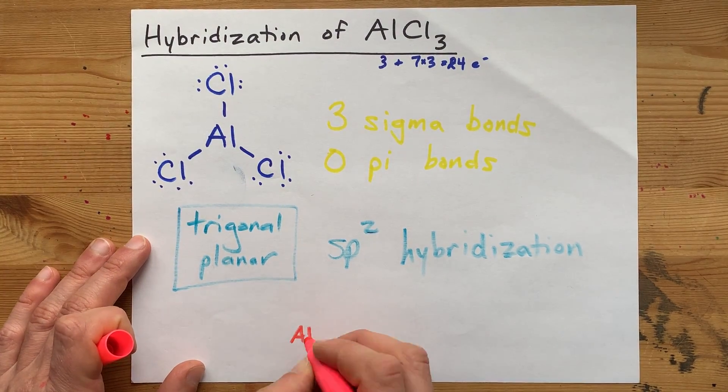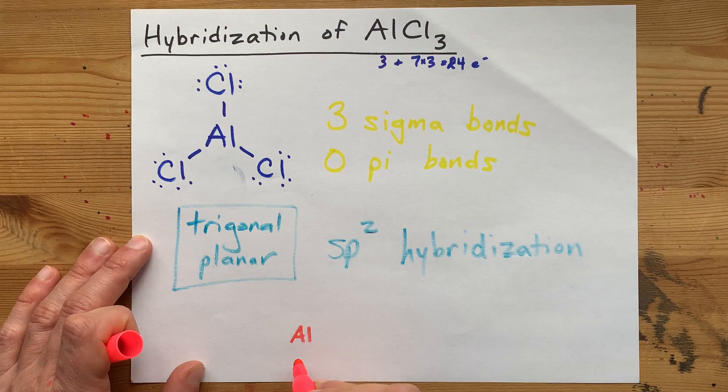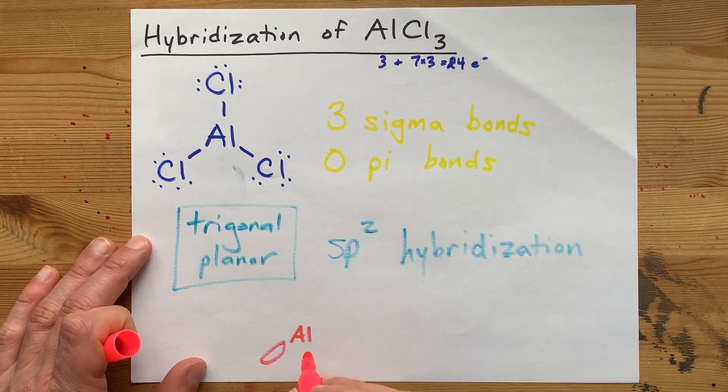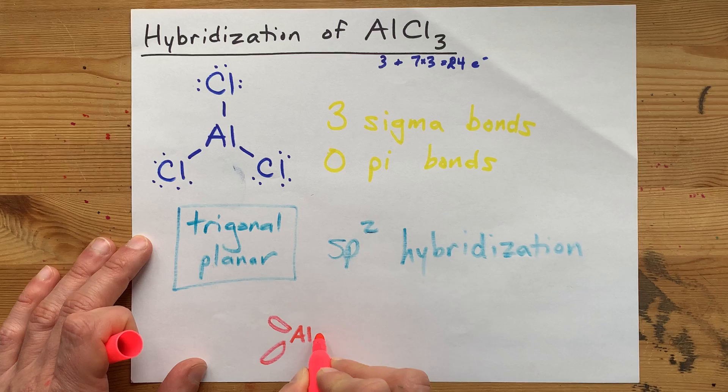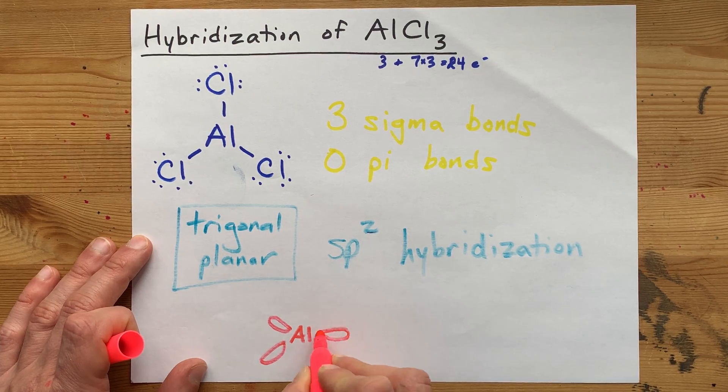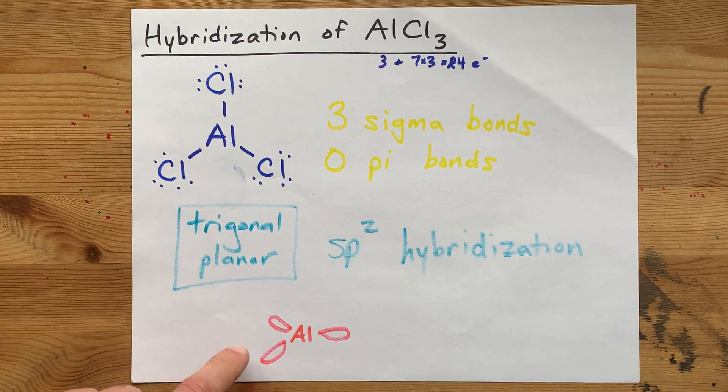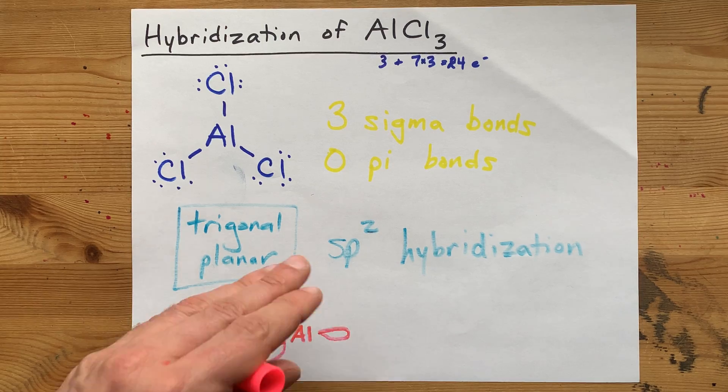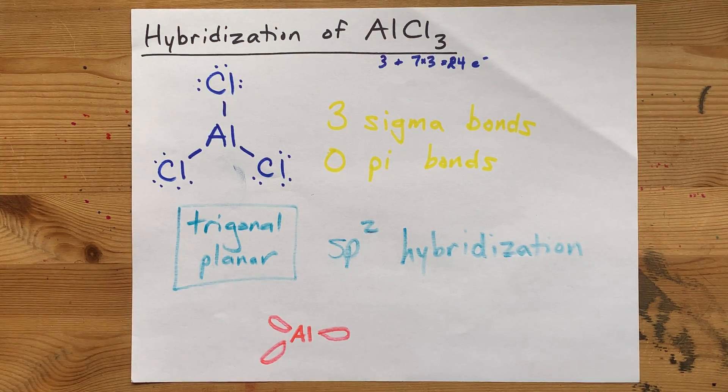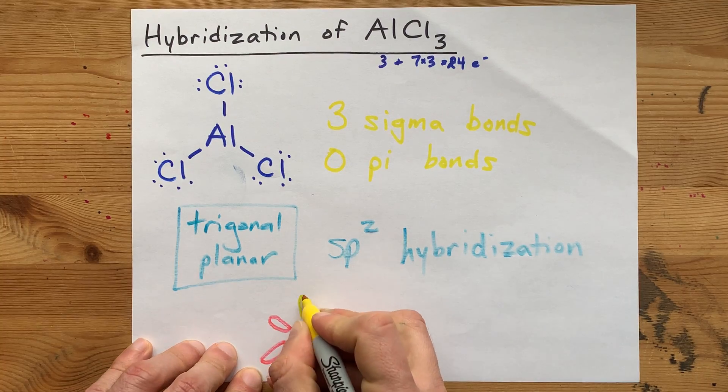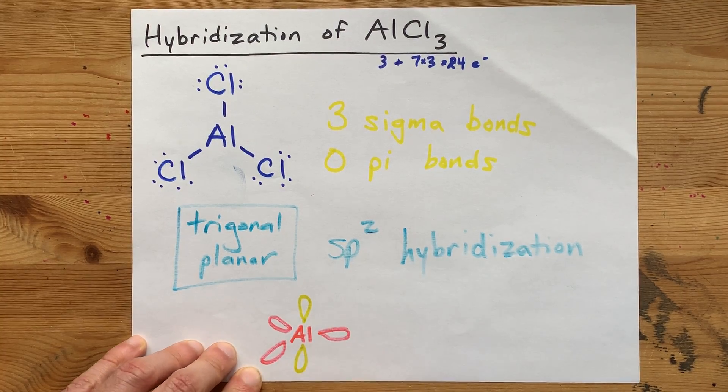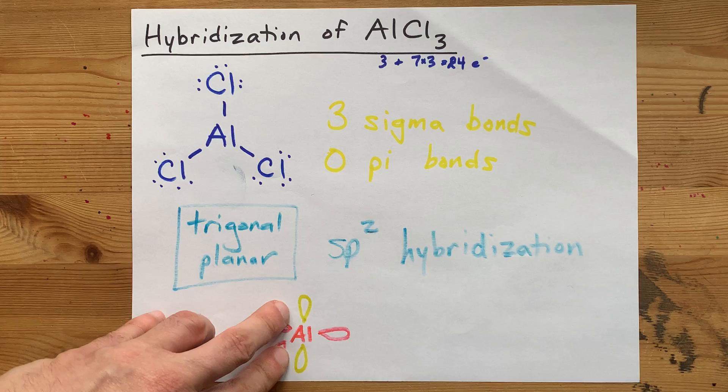So if I was to draw an orbital overlap diagram, I'd have to draw my Al in the center. There's one coming out at you. There's one going back into the page. There's one going straight to the right. These are the three sp2 hybridized orbitals.